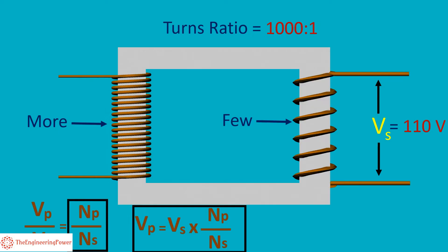Here Np by Ns is called the turns ratio. So by detecting the secondary voltage Vs with a standard low rating voltmeter, the voltmeter automatically multiplies it with the turns ratio Np by Ns to give us the high primary voltage Vp.